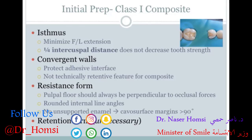You don't want unsupported enamel. To ensure this, the angle formed between the cavity wall and the external surface of the tooth should be greater than 90 degrees. If it's less than 90 degrees, you have the risk of unsupported enamel that may fracture and compromise the integrity of the restoration. Retention form is largely unnecessary because of adhesive dentistry — we don't really need to rely on mechanical retention.